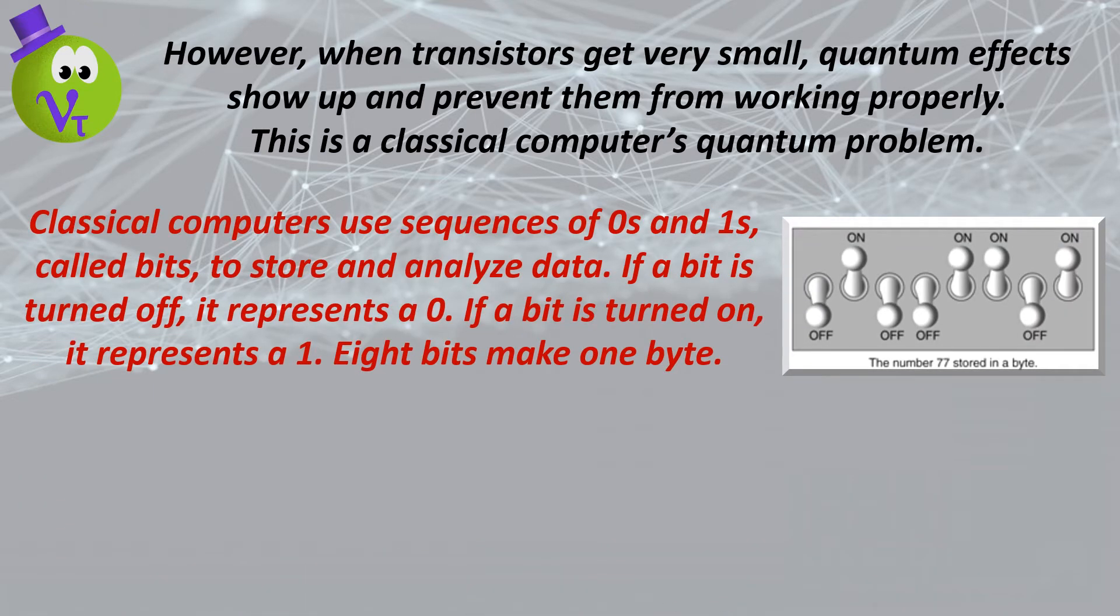Classical computers use sequences of zeros and ones, called bits, to store and analyze data. If a bit is turned off, it represents a zero. If a bit is turned on, it represents a one. Eight bits make one byte.